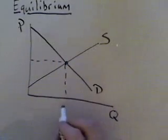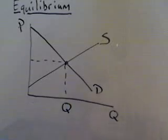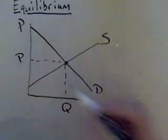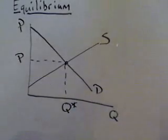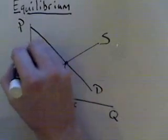And if we draw our dashed lines, this is going to give us our equilibrium quantity and our equilibrium price. And those are usually shown with what's called a Q-star and a P-star.